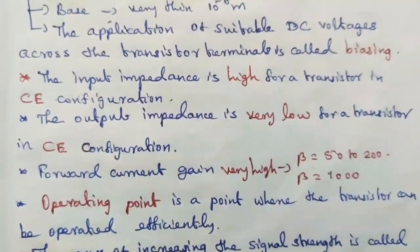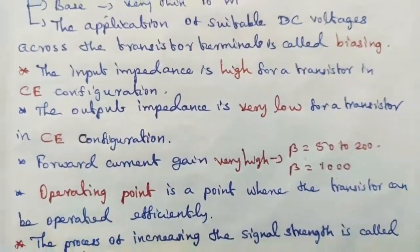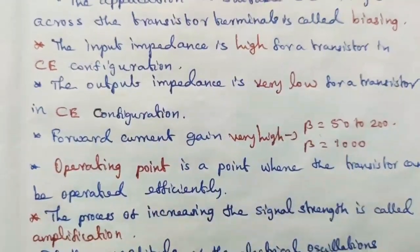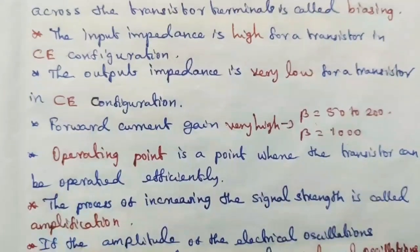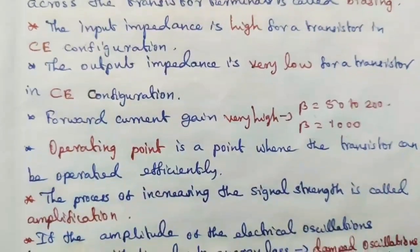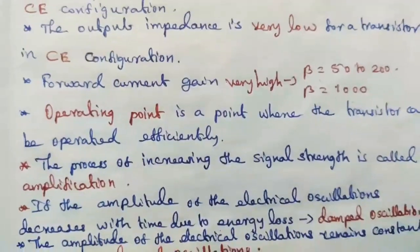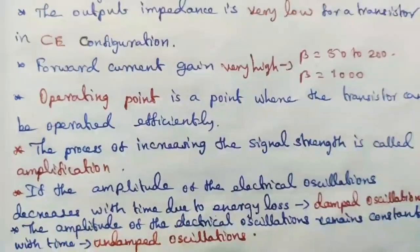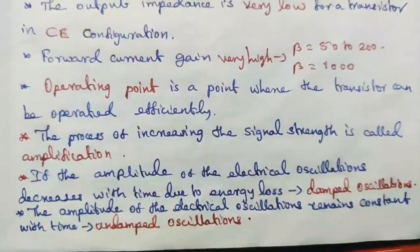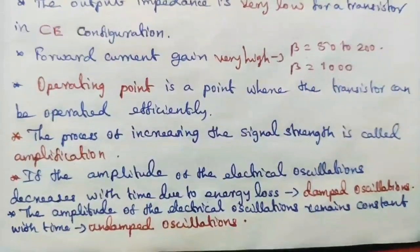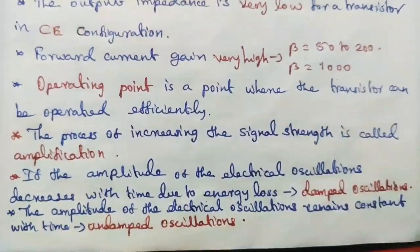Operating point is a point where the transistor can be operated efficiently. The process of increasing the signal strength is called amplification. If the amplitude of the electrical oscillations decreases with time due to energy loss, these are damped oscillations. If the amplitude of the electrical oscillations remains constant with time, these are called undamped oscillations.